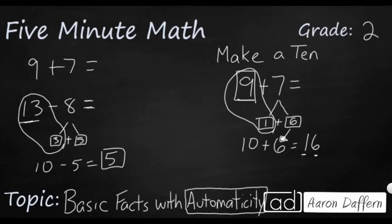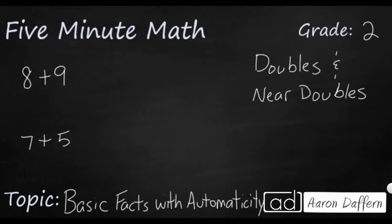Let's look at another strategy. Our next strategy is called doubles and near doubles. And just like making a 10, it might seem a little bit slow at first, but if you do it again and again and again, you get so fast, you become automatic.